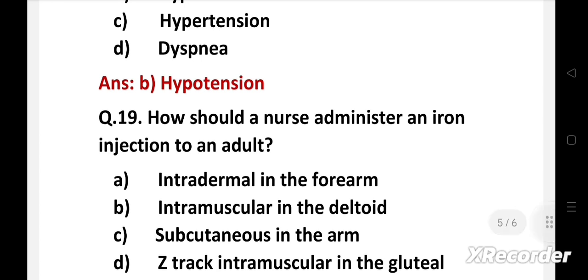Next question. How should a nurse administer an iron injection to an adult? Option A: Intradermal in the forearm. B: Intramuscular in the deltoid. C: Subcutaneous in the arm. D: Z-track intramuscular in the gluteal.